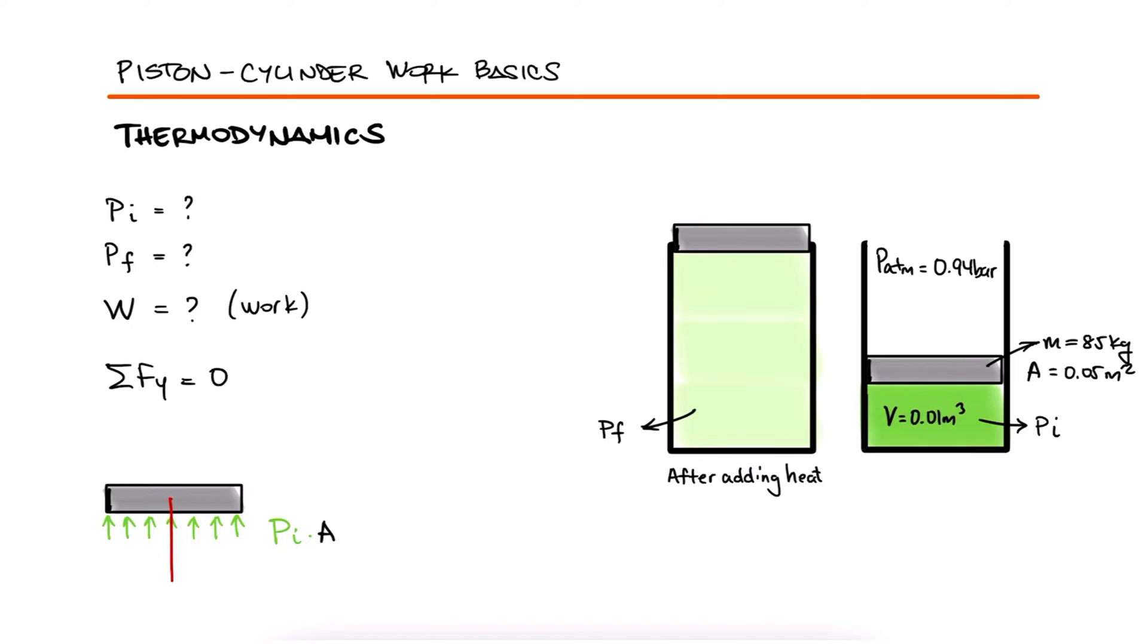Additionally, we have the weight of the piston, mg, going down, as is the downward force caused by the atmospheric pressure going down, also pressure times area.